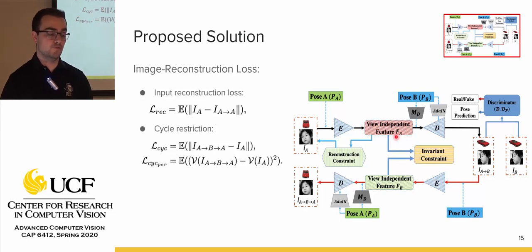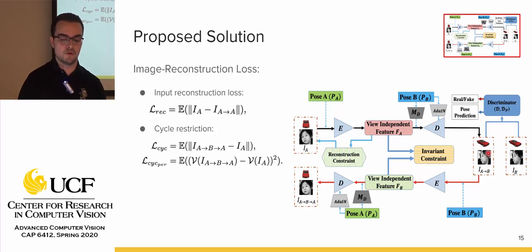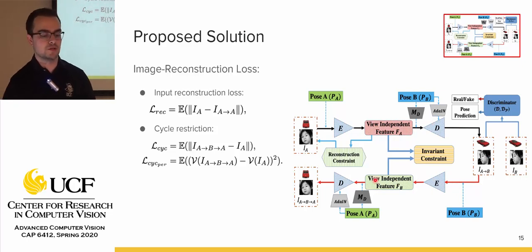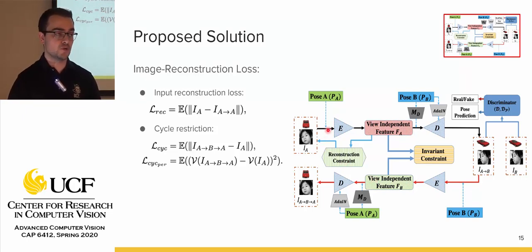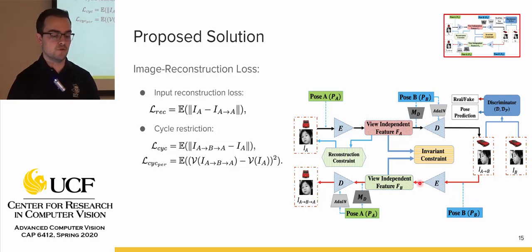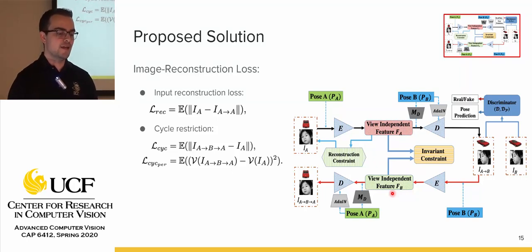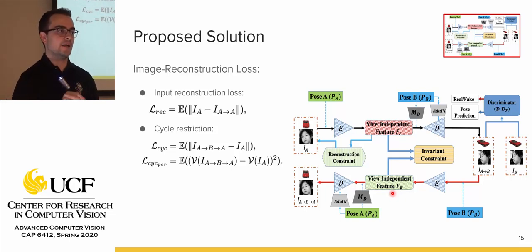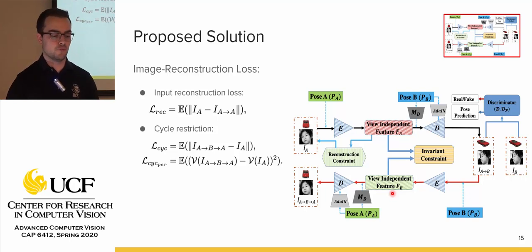The last image reconstruction loss is cycle restriction. Starting with the source pose and source image, they are passed into the encoder to get view-independent features, the target pose is applied to get a synthetic target image, and then that synthetic target image is passed back into the encoder with the target pose to get view-independent features again. These features are then used with the source pose to regenerate the source image. The pixel-level and perceptual loss of this cycle reconstruction is also computed.